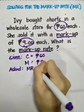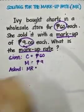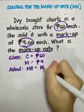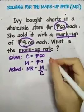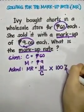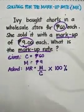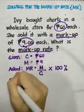How do we solve for the MR? The formula is markup divided by the cost multiplied by 100 percent. This is the formula for getting the markup rate.